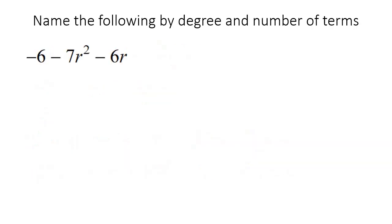And so now we're going to go ahead and name these according to degree and number of terms. So this has three terms, so that's a trinomial. The highest exponent is a 2, so we would actually call this a second degree trinomial.